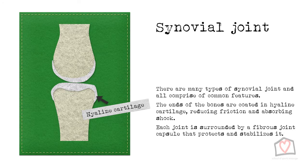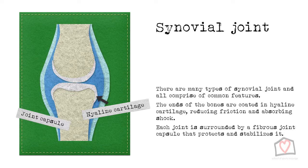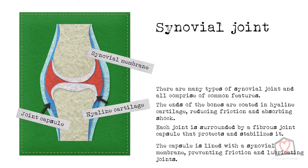Each joint is surrounded by a fibrous joint capsule, often formed by thick capsular ligaments, which protect and stabilise the joint. The inside of this capsule is lined with a synovial membrane — a thin film that secretes synovial fluid into the joint capsule. This thick fluid is crucial in preventing friction between the bones and acts to lubricate the joint. It is always present in the capsule, but its release is triggered by heat and movement, hence why people often feel stiffer in the cold.